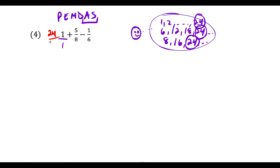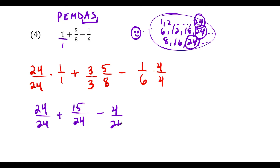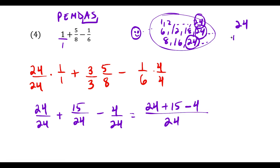So we say times 24/24 for the whole number 1. We have 24/24 times 1/1, plus 5/8 times 3/3, minus 1/6 times 4/4. This simplifies to 24/24 plus 15/24 minus 4/24. Combining into one denominator: 24 plus 15 minus 4 over 24. Doing the arithmetic: 24 plus 15 is 39, minus 4 is 35. So this is 35/24.